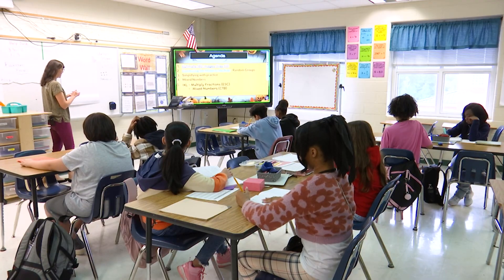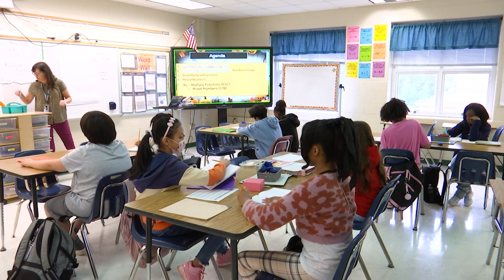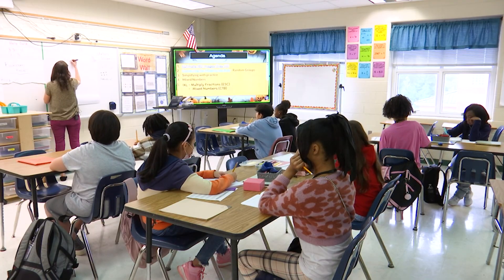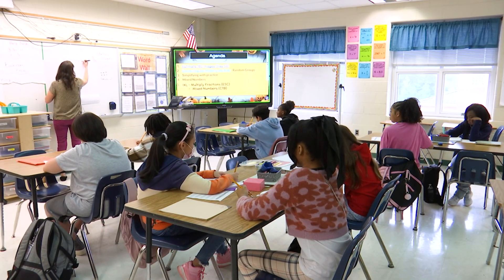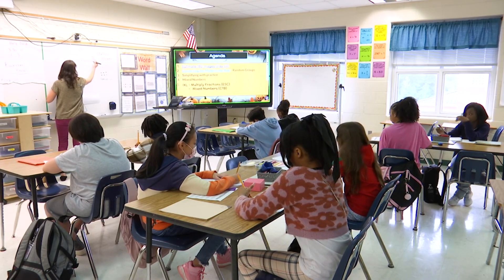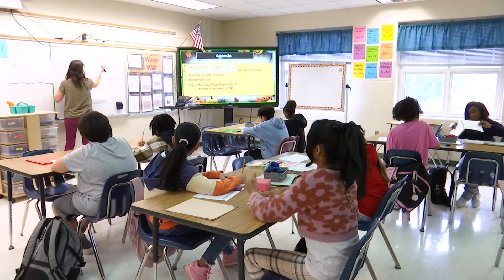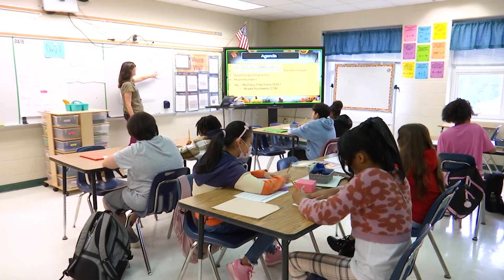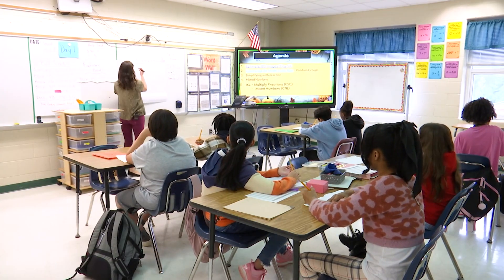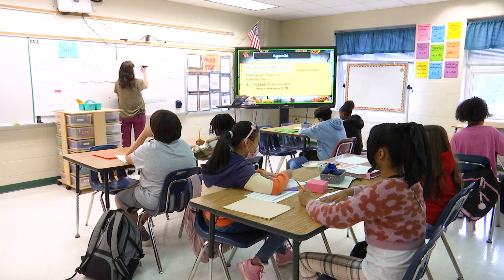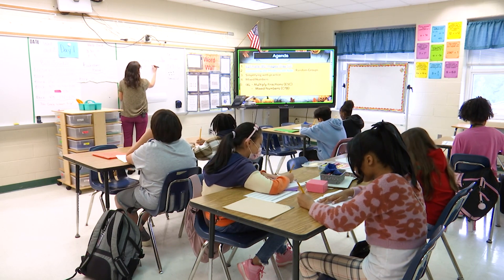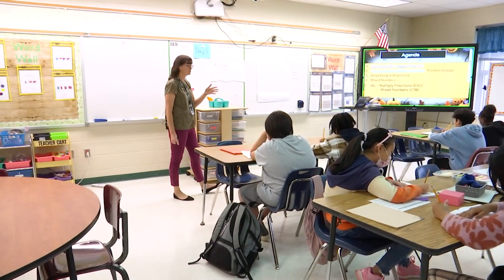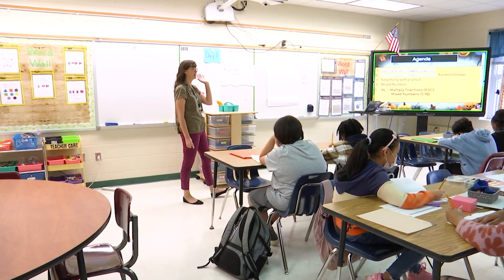So when we multiply fractions, I wanted to make sure that we understood why we use the area model. So write this in your notebook: multiplying fractions is similar to multiplying integers, but instead of finding how many groups of something, you're finding parts — part of a part. Because you're multiplying two fractions, right? A fraction is just a part of a number, so when you multiply two fractions, you're finding a part of a part.